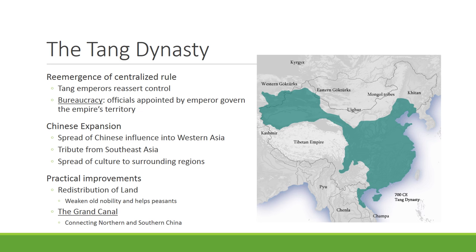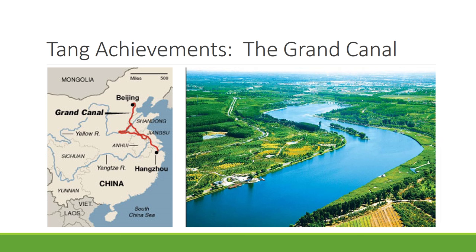There were also practical improvements, including the redistribution of land to peasants, which helped normal people and weakened the old conservative nobility. The Tang also constructed the Grand Canal, which you can see on the map connecting the Yellow River and the Yangtze River — an enormous engineering achievement, basically an artificial river dug in the Middle Ages.